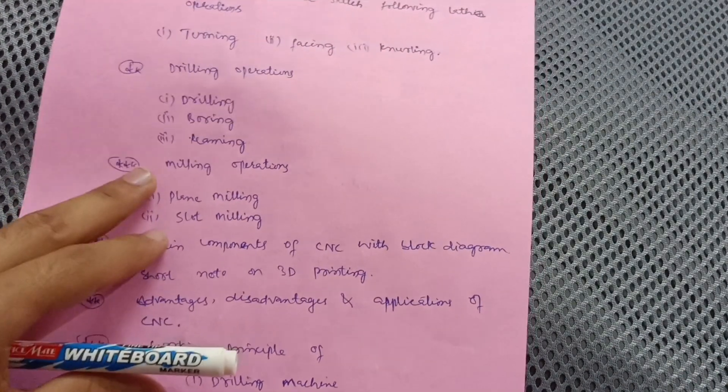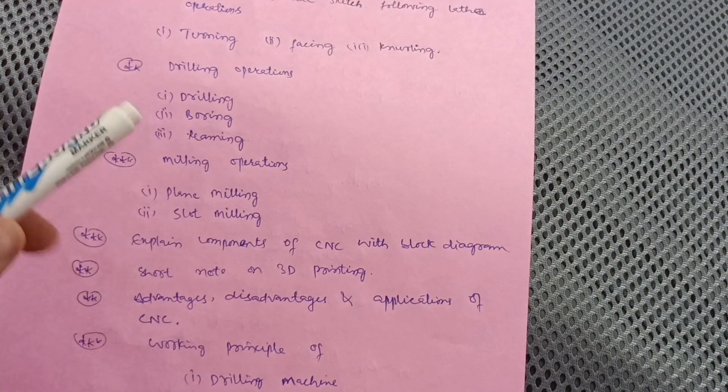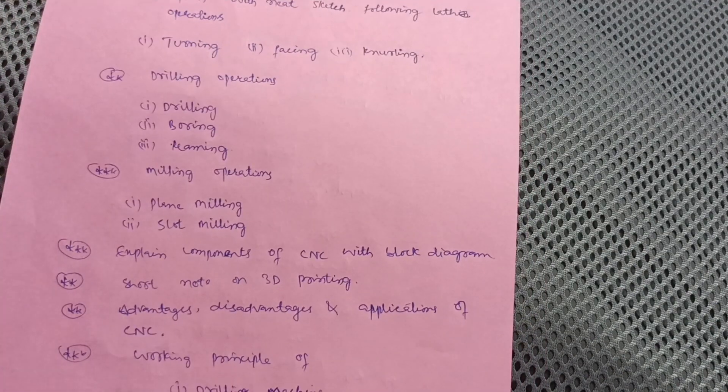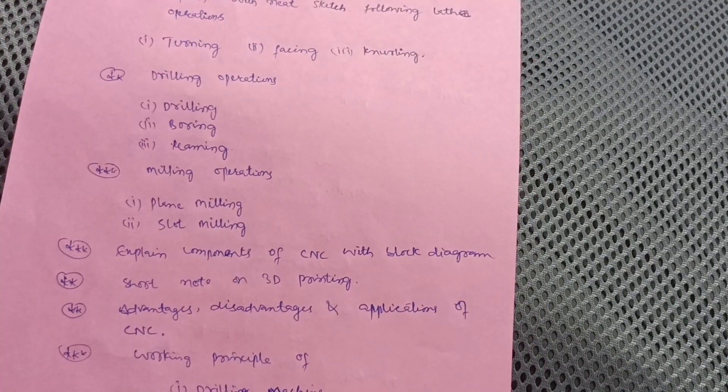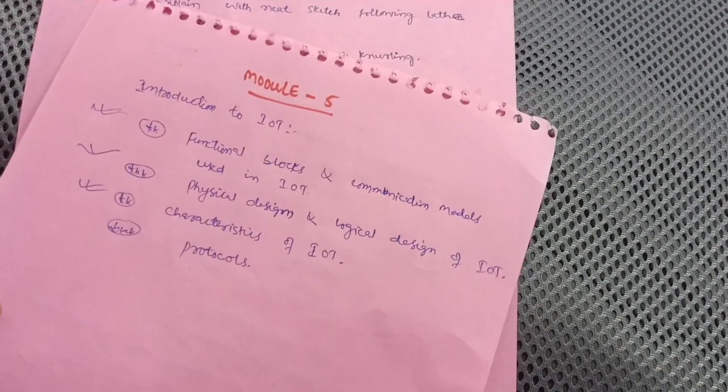This is enough content in Module 2 so that you will cover at least 15 marks. Just focus on these lathe operations, drilling operations, and milling operations. Then Module 5, which is simple. There are two chapters: mechatronics and robotics, which you can leave.